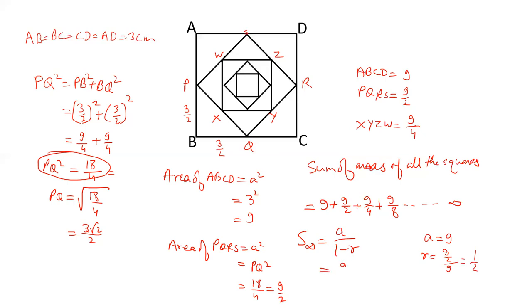So put the value here. A is 9, R is 1 by 2. 1 minus half is half. 9 into 2 will be 18. Sum of areas of all the squares will be 18.